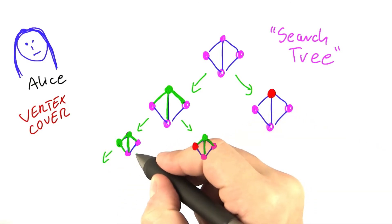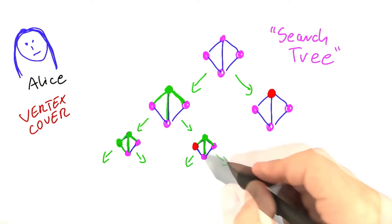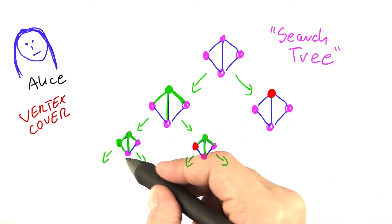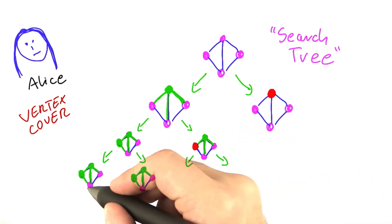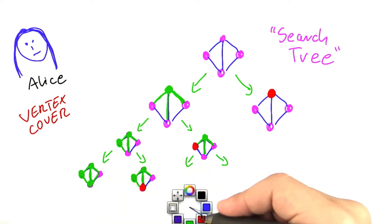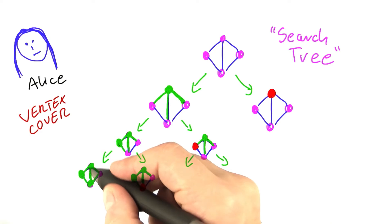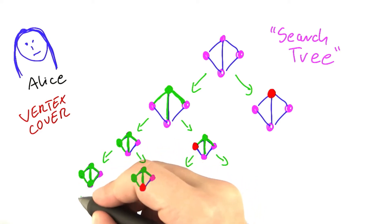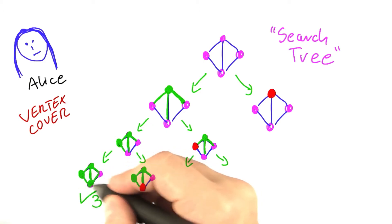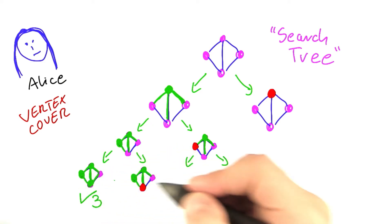And then for each of these cases, again, we can split into two possibilities. This time we're going to look at the vertex down here, same here. So one case where we put it into the vertex cover, and another case where we don't. Now here, for this case already, we can stop. We have found a solution of size three. All edges are covered. We do not even need to consider the possibilities for this vertex here.